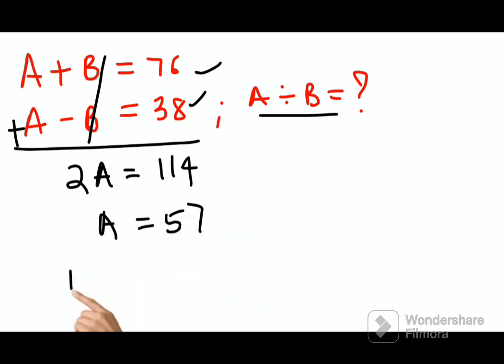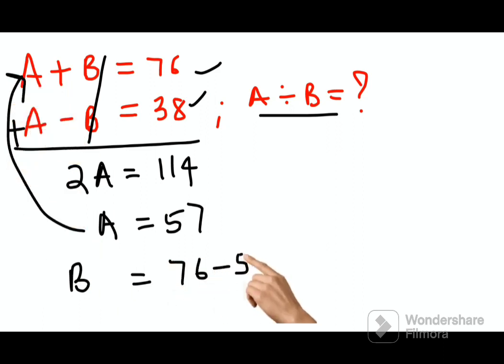So now B value will be, I am substituting this in the first equation. So B is 76 minus 57. So here your answer is coming out to be 19.